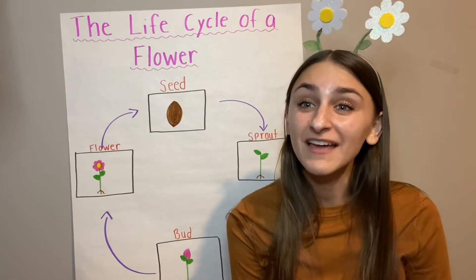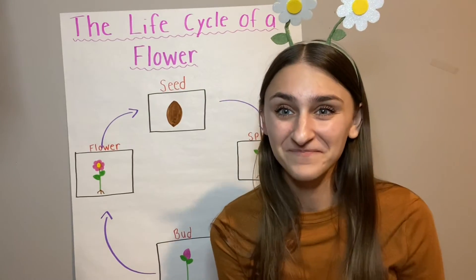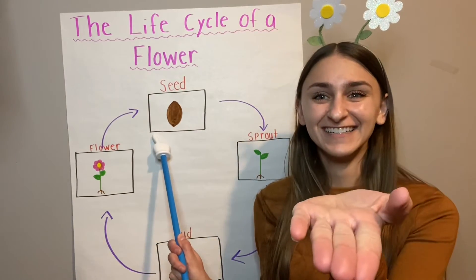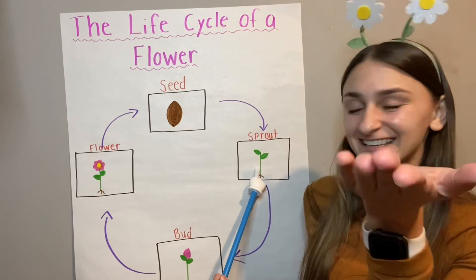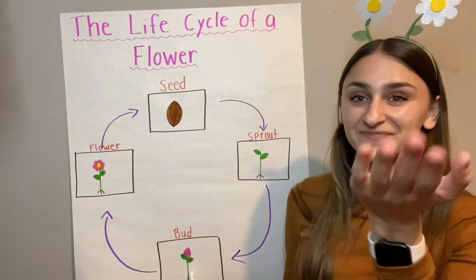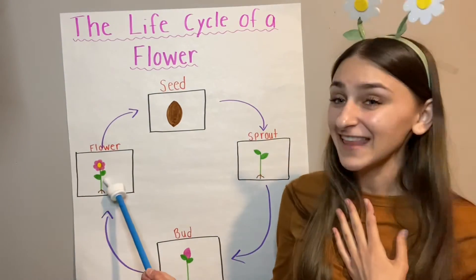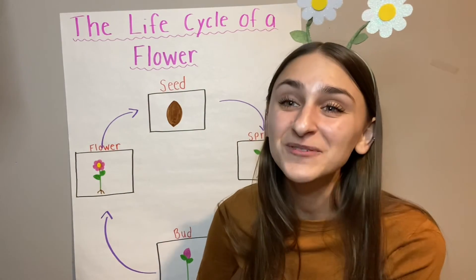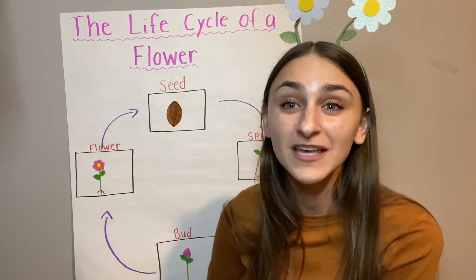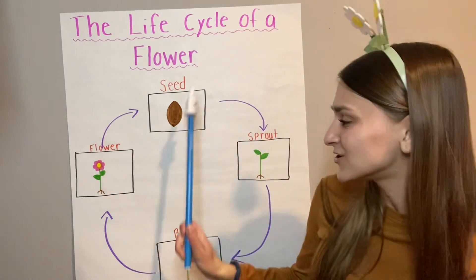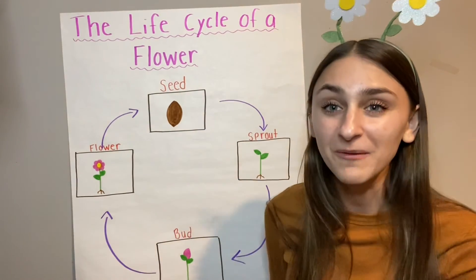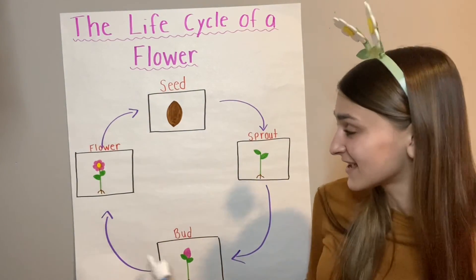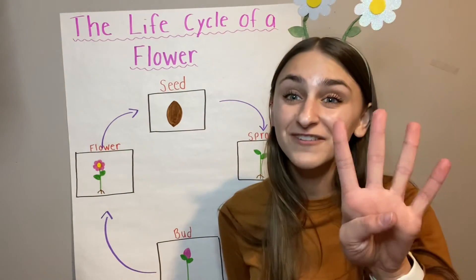Bumblebees, can you help me say the life cycle of a flower one more time? Are you ready? Seed. Sprout. Bud. Flower. And then, it repeats itself all over again. Today, we're going to practice learning about the life cycle of a flower. How many stages are there in the life cycle of a flower? Can you help me count? One, two, three, four. Four different stages.